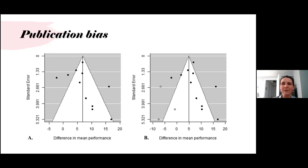A trim-and-fill analysis shows that when the estimate is adjusted for three missing studies, it is reduced to 4.9% compared to the original estimate of 6.9%.